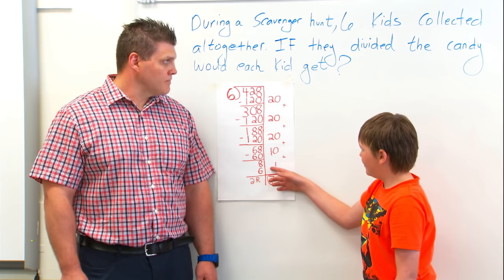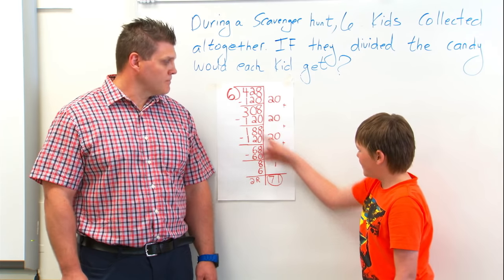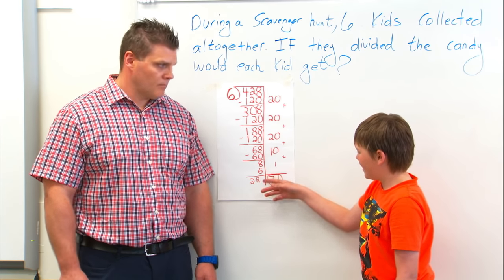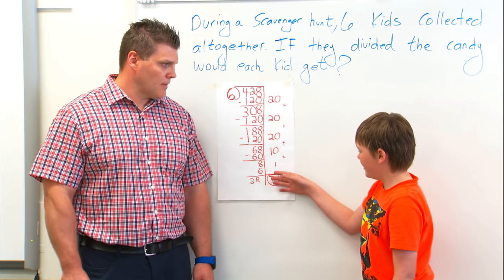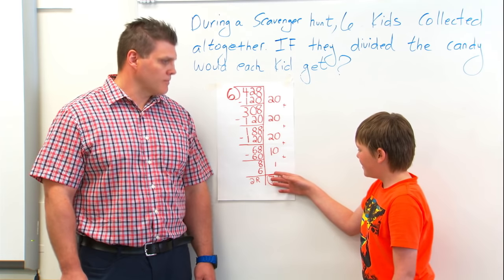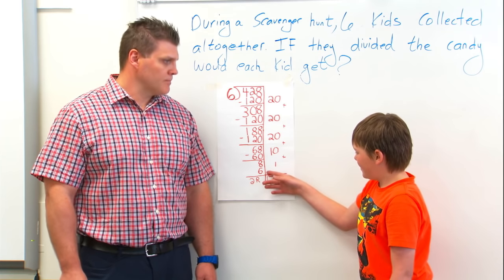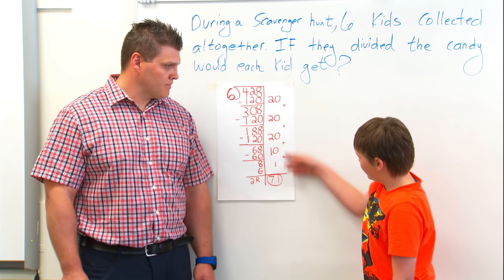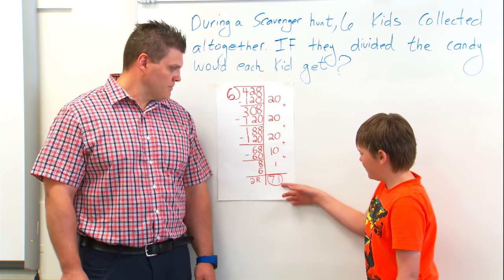Then I do 1 times 6, which is 6, because I can't go higher than 8. And then I can't minus it anymore. That gave me 2 as a remainder. I added these up and I got 71.